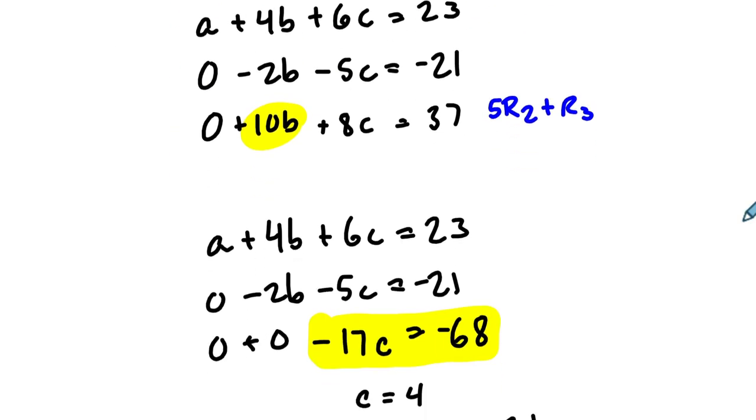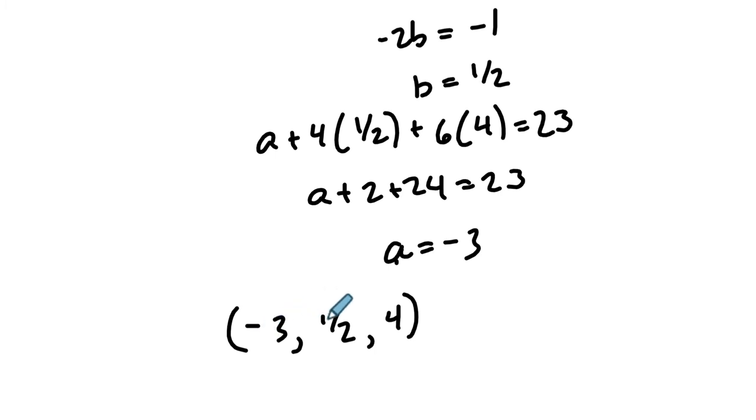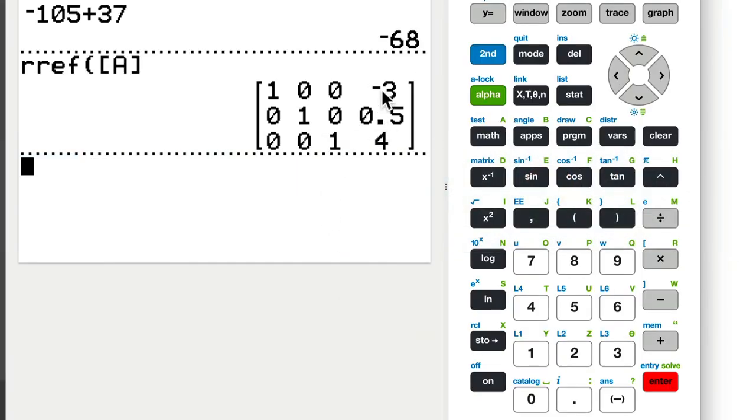So negative 3, that's what we got, right? Negative 3, 1 half, 4. It's right here as well. So you can actually use this to always check. And that's reduced row echelon form. Notice they got zeros up here as well, which we didn't do. We just got these three zeros. And they get ones on the diagonal. We didn't do that.